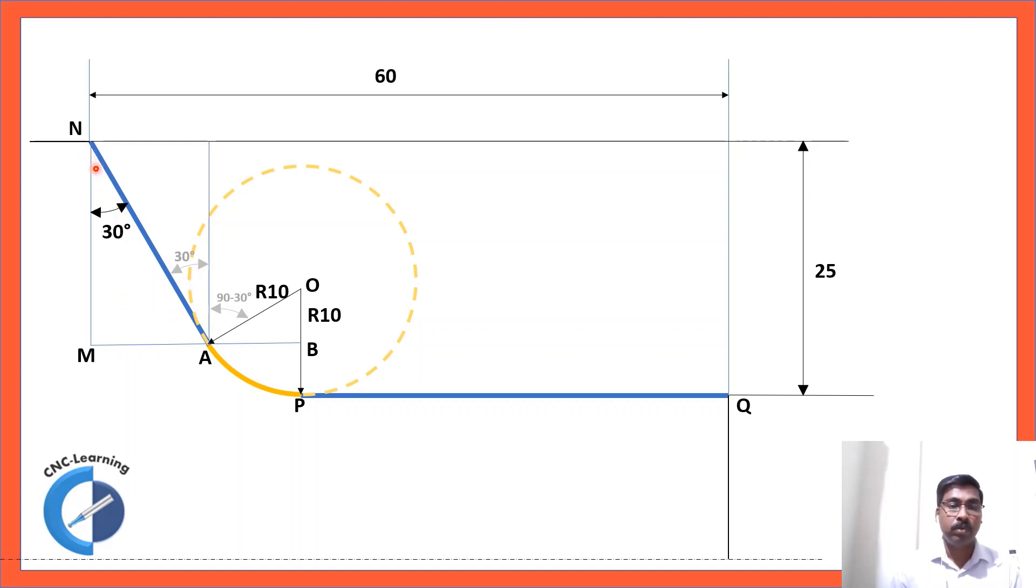Now, this is a tangent line and this is a radius line. So, this will always make a 90 degree. Now, this we have calculated this is 30 degree. This total is 90 degree. So, this angle would be 90 minus 30 degree. Now, if that is the case, then this is again 90 degree and this is 90 minus 30. So, this is 90 minus 90 minus 30 which is 30 degree.